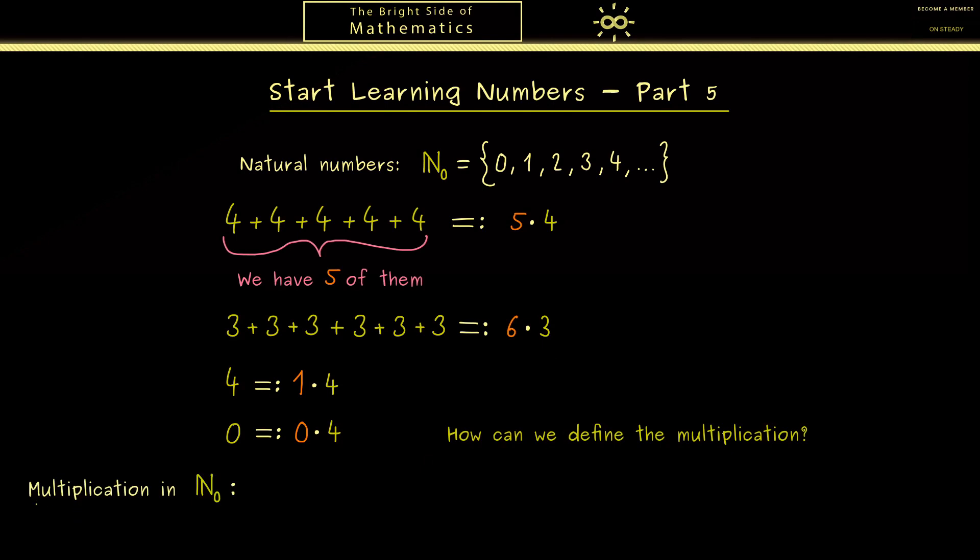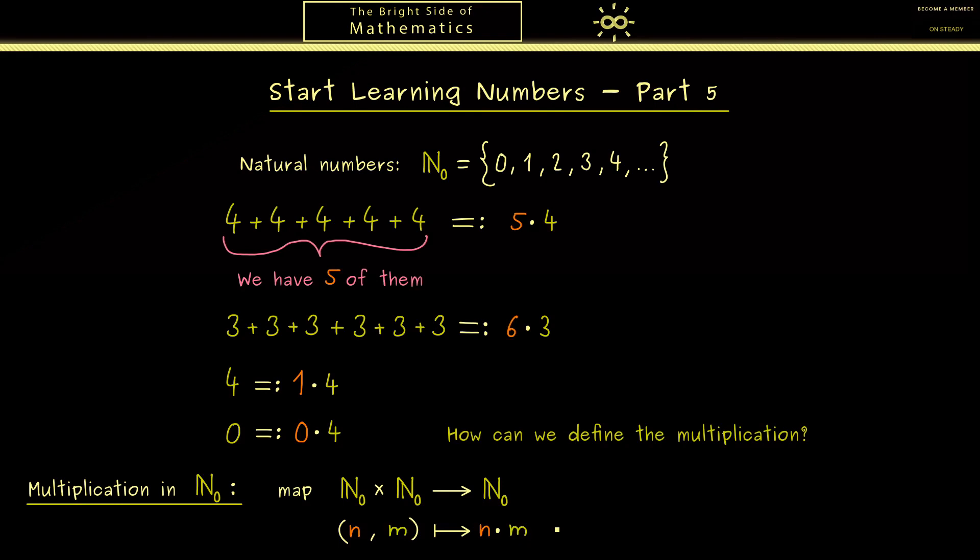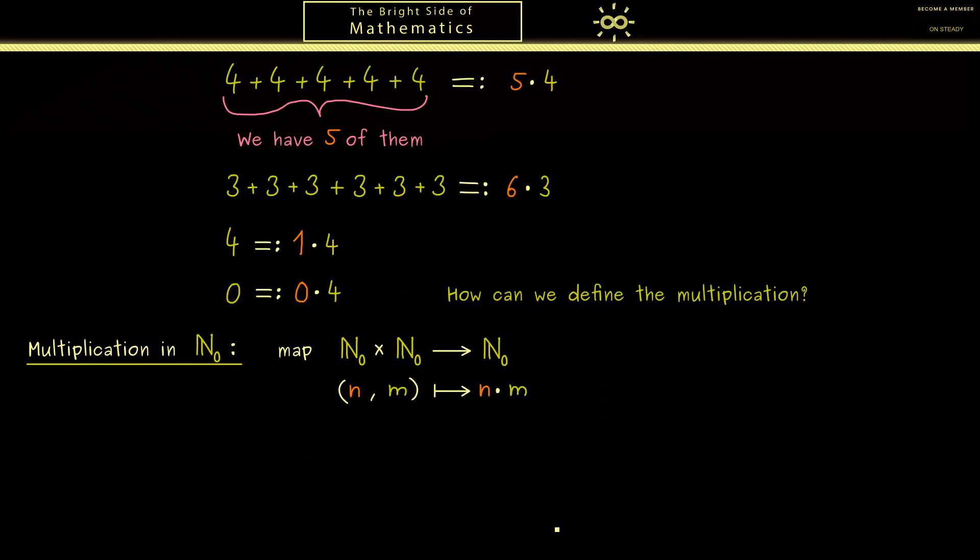The first step for this is to note that the multiplication should be a map. There we have 2 numbers as the input and 1 natural number as the output. And then in the next step we have to give the definition of this map.